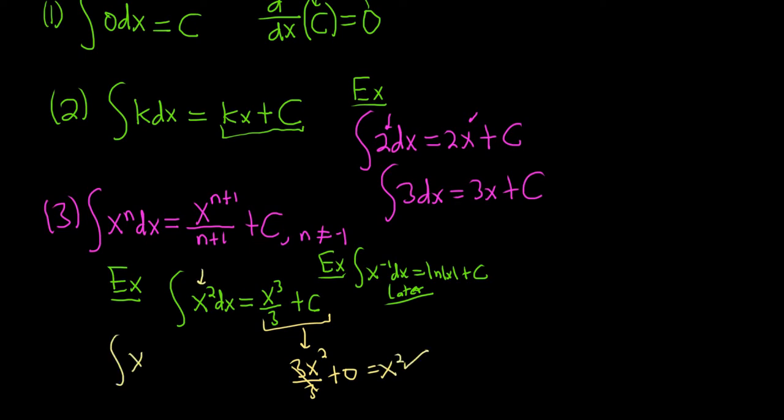Say we had x to the 4th dx. Same thing. In this case, we just add 1. So 4 plus 1 is 5. Then you just divide by 5. And then you add your constant of integration, c.